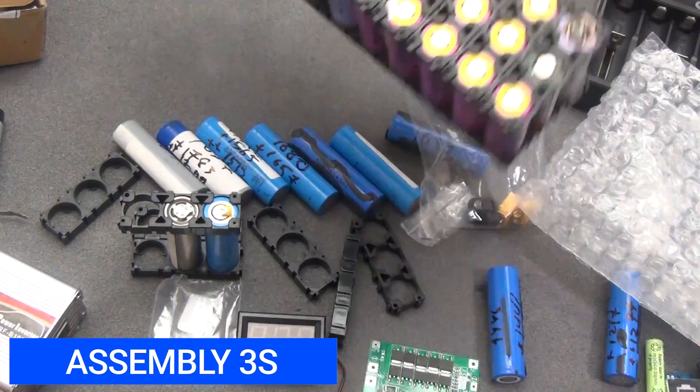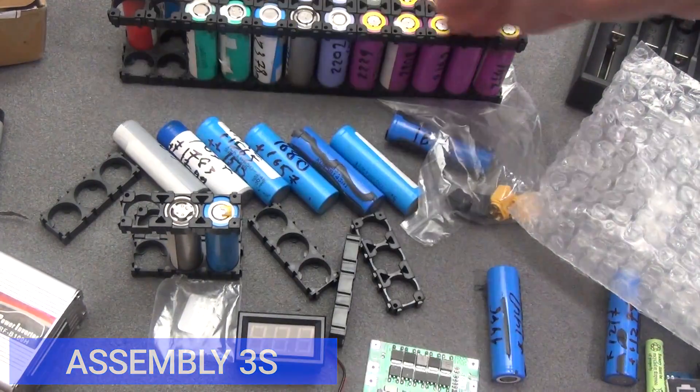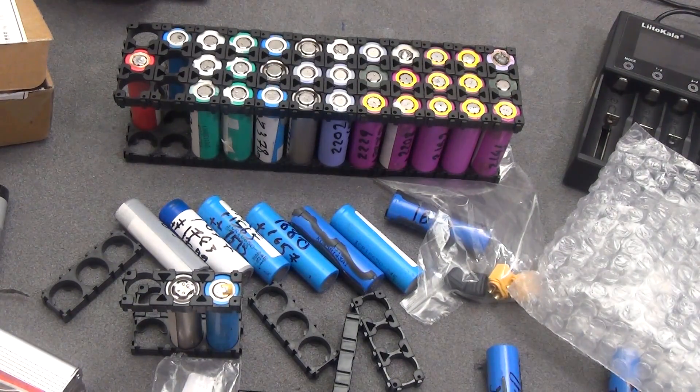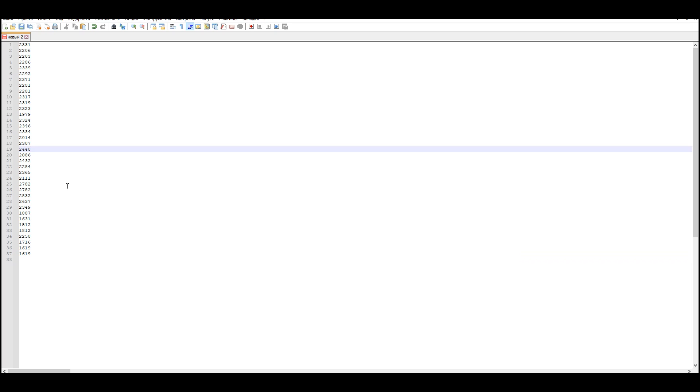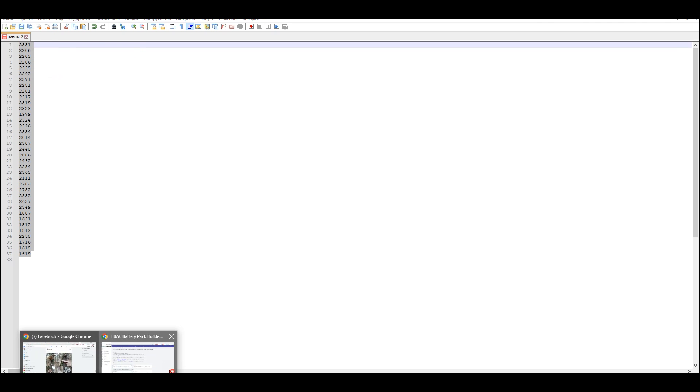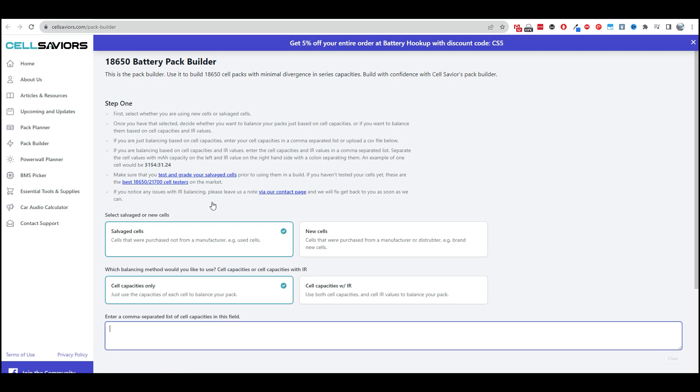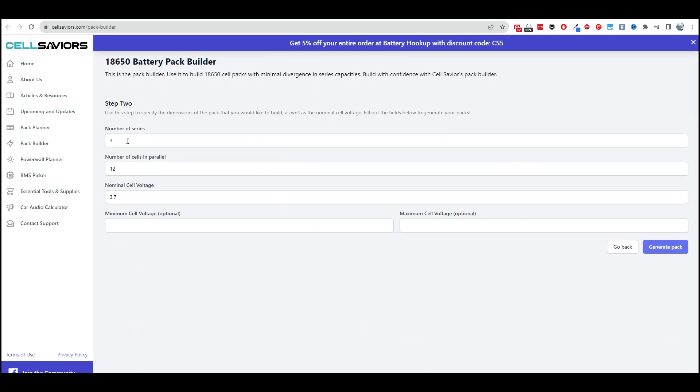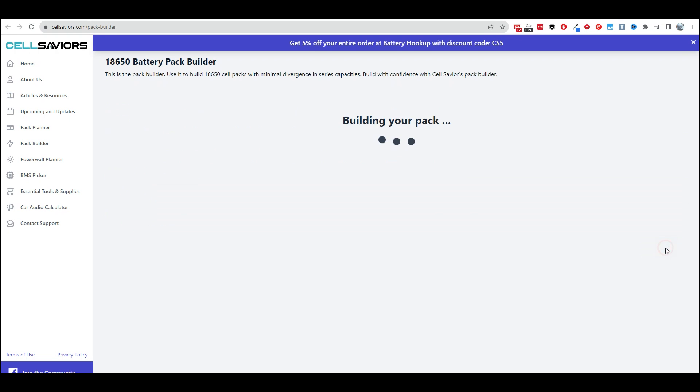Since my batteries have different capacities, we need an assembly calculator. So that we get, having connected all ours, to place them correctly, and not to lose in the capacity of our battery. We create a text document and enter in it the capacity of all our batteries that we have. Then we copy and go to the site selesviers.com slash pack dash builder.